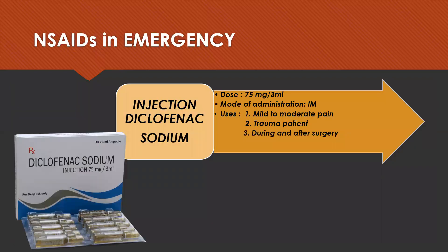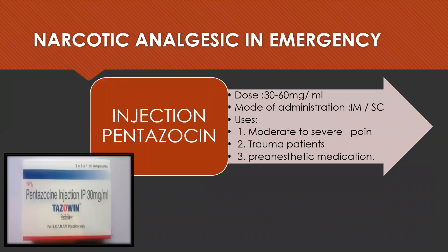NSAIDs in emergency: injection diclofenac sodium is used in emergency at a dose of 75 mg per 3 ml intramuscularly, for mild to moderate pain, trauma patients, or during and after surgery. Narcotic analgesics in emergency: injection pentazocine is given at a dose of 30 to 60 mg per ml intramuscularly or subcutaneously to treat moderate to severe pain in trauma patients and also as pre-anaesthetic medication.